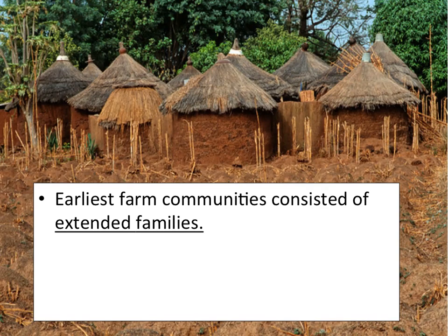The first thing you need to know is that the earliest farm communities in West Africa consisted of extended family. Your extended family is not just your parents, brothers, and sisters — it would include aunts, uncles, cousins, grandparents, and essentially anyone you are related to. In West Africa, they all lived together in the same village, in the same cluster of homes like you see in this picture.